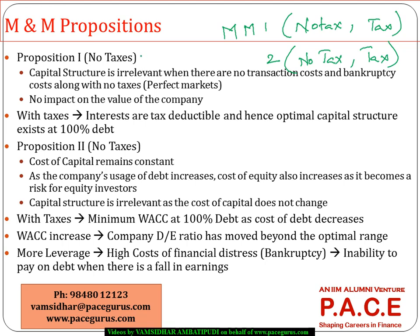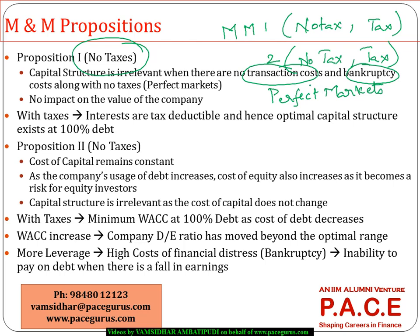Some important assumptions are when there are no taxes, no transaction costs, and no bankruptcy costs — that is the case of perfect markets. This perfect market should not be confused with perfect competition in economics. Here we are talking about no transaction costs, no taxes, no bankruptcy costs — nothing. In that case, the capital structure is really irrelevant.